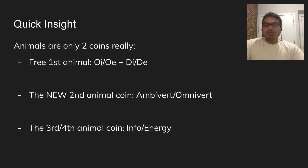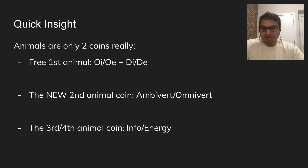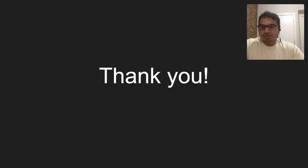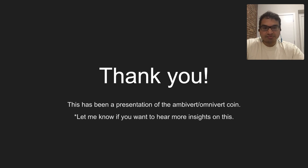The animals are really only determined by two coins. You get the first animal for free with the OI/OE/DI/DE coin. This ambivert/omnivert coin gives you the second animal. Finally, the third and fourth animals are given by the info-energy coin. So there are two coins to determine the first animal, one coin to determine the second animal, and one coin to determine both the third and fourth animals. That's a pretty interesting way it works.